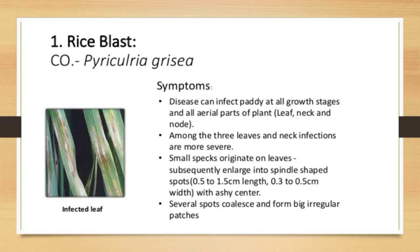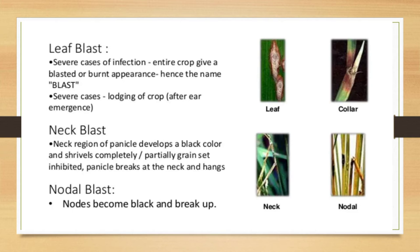The disease can infect paddy at all growth stages and all aerial parts of the plant — that is leaf, neck, and nodes. Among these, leaf and neck infections are more severe. Small specks originate on leaves, subsequently enlarge into spindle-shaped spots with an ashy center. Several spots coalesce and form big irregular patches. The characteristic symptom of blast is spindle-shaped spots with an ash-colored center.